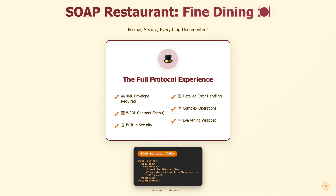Now let's visit the SOAP restaurant. Welcome to fine dining, where everything has a protocol. First, you need an XML envelope just to make a reservation — that's like needing a formal invitation just to walk in the door. Then there's the WSDL contract, basically a 50-page menu that describes every possible way you can order. Look at that request format: everything wrapped in tags, inside more tags, inside an envelope. It's like ordering a burger and having it delivered on a silver platter, inside a locked box, with a notarized receipt. Is it secure? Absolutely. Is it reliable? You bet. Is it overkill for ordering a burger? Yeah, probably.